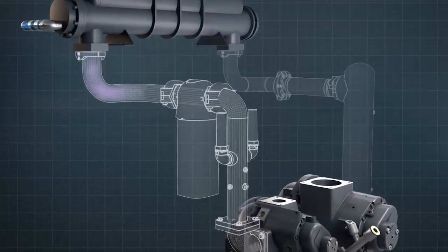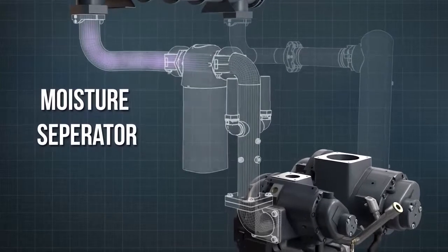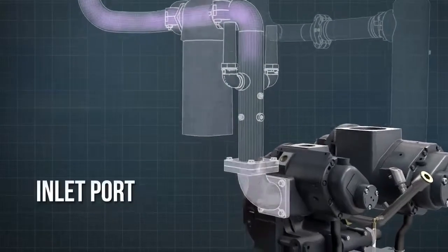The cooled, compressed air passes through a moisture separator, then onto the inlet port of the second stage.